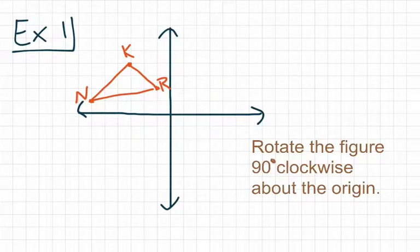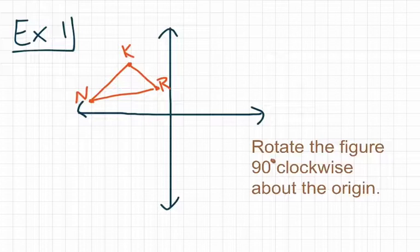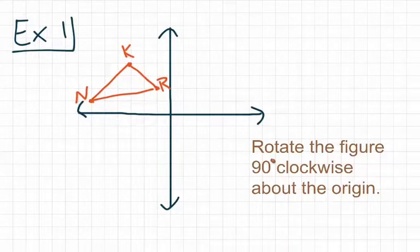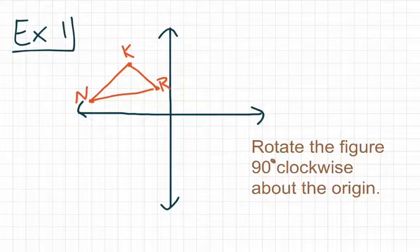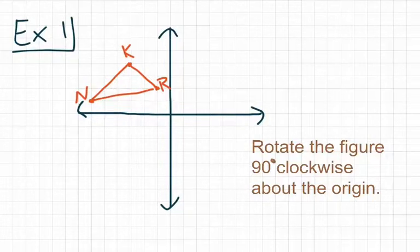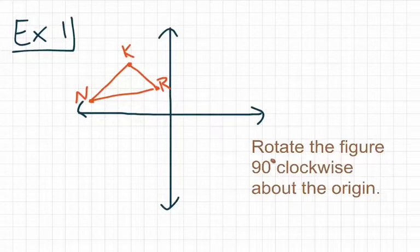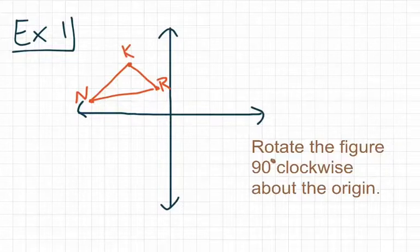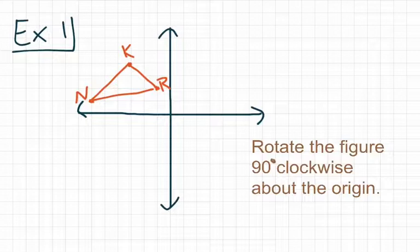Turn the entire sheet of paper one quarter turn. That's the same thing as a 90 degrees clockwise rotation. Quarter turn is 90 degrees, a half turn is 180 degrees, three quarters of a turn is 270 degrees, and then a full turn would be a full 360 degrees rotation.